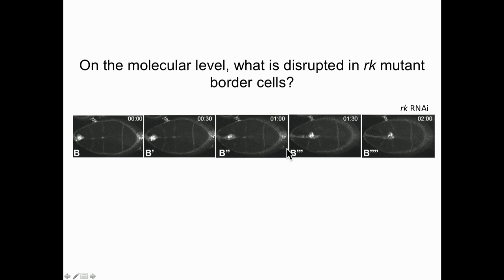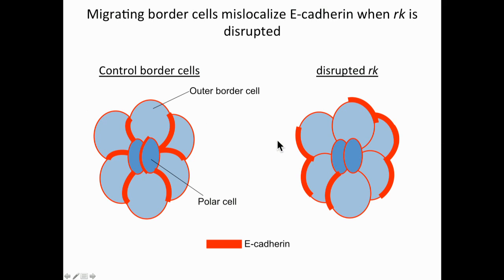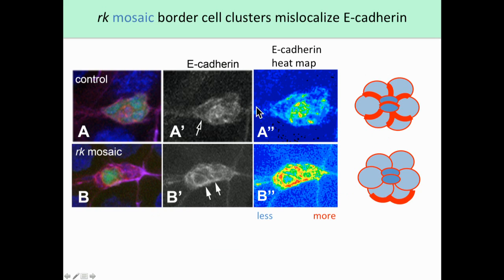I noticed that in the detachment phenotype, the cluster was still adhering to the epithelium, so I wanted to look at adhesion proteins and see how they were contributing to the RICKETS phenotype. E-cadherin is known to be important for border cell migration and is expressed at high levels at border cell–border cell boundaries, and at lower levels around the periphery. When I disrupted RICKETS in the border cells, E-cadherin was redistributed to higher levels around the periphery of the cluster. In control border cell clusters, E-cadherin is high at border cell–border cell interfaces, not around the periphery. In the RICKETS mosaics, E-cadherin is now high around the periphery.